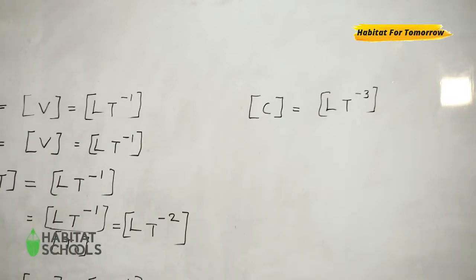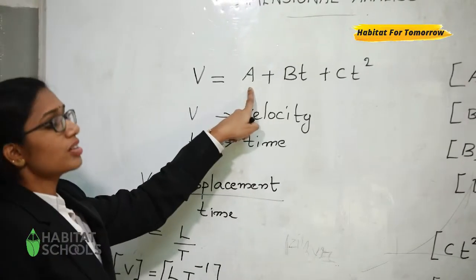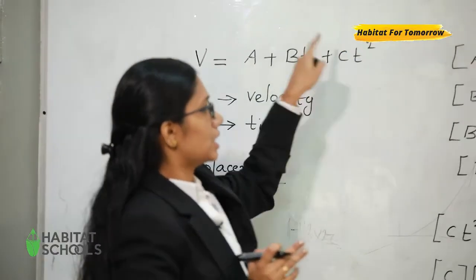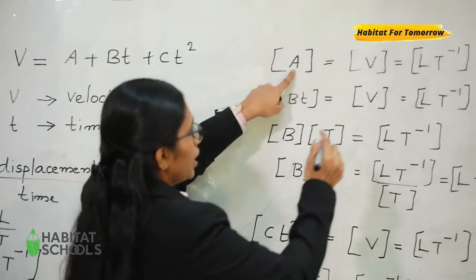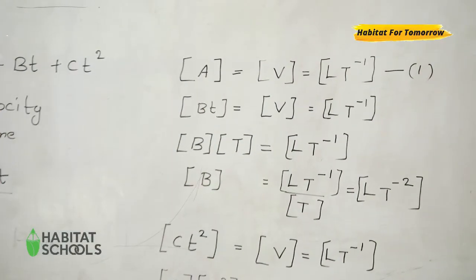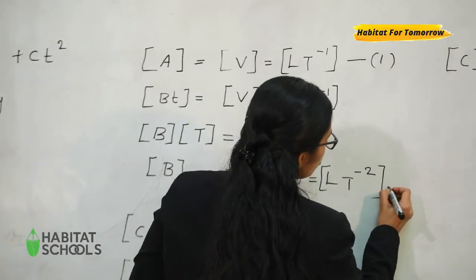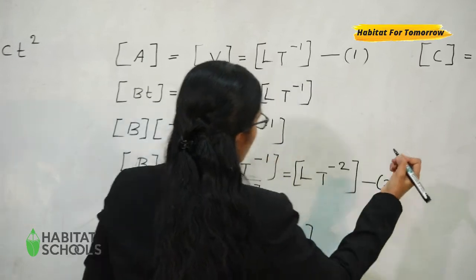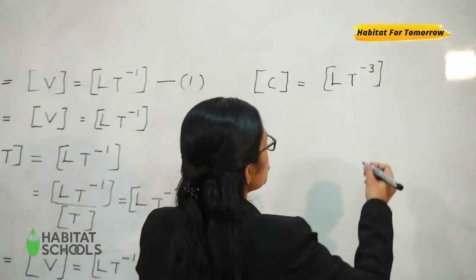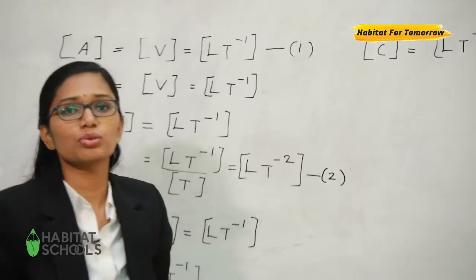So now we have found the dimensions for the unknown quantities A, B and C as per the given equation. Dimension of A is L T raised to minus 1. Dimension of B is L T raised to minus 2. And dimension of C is L T raised to minus 3. Thank you.